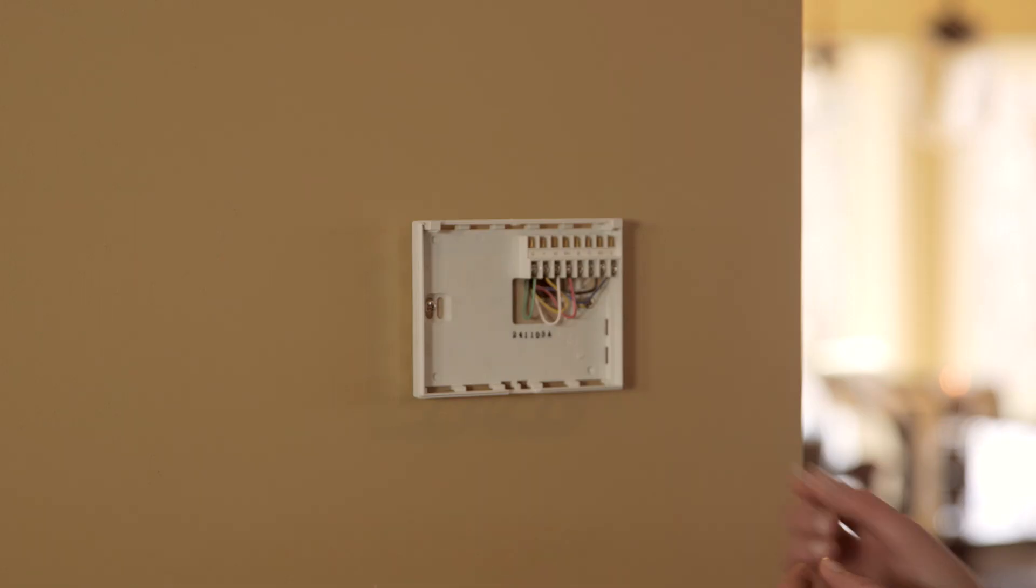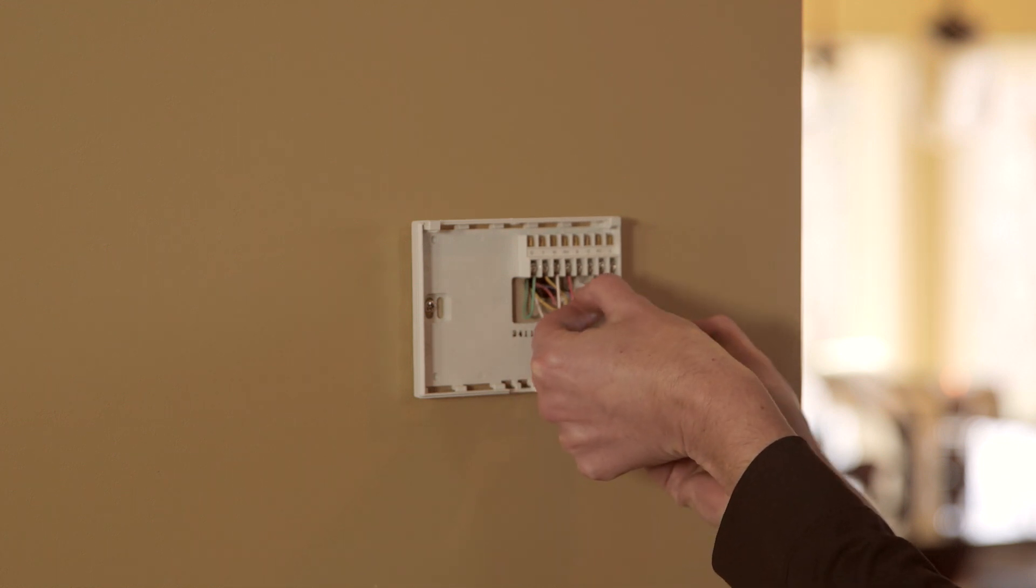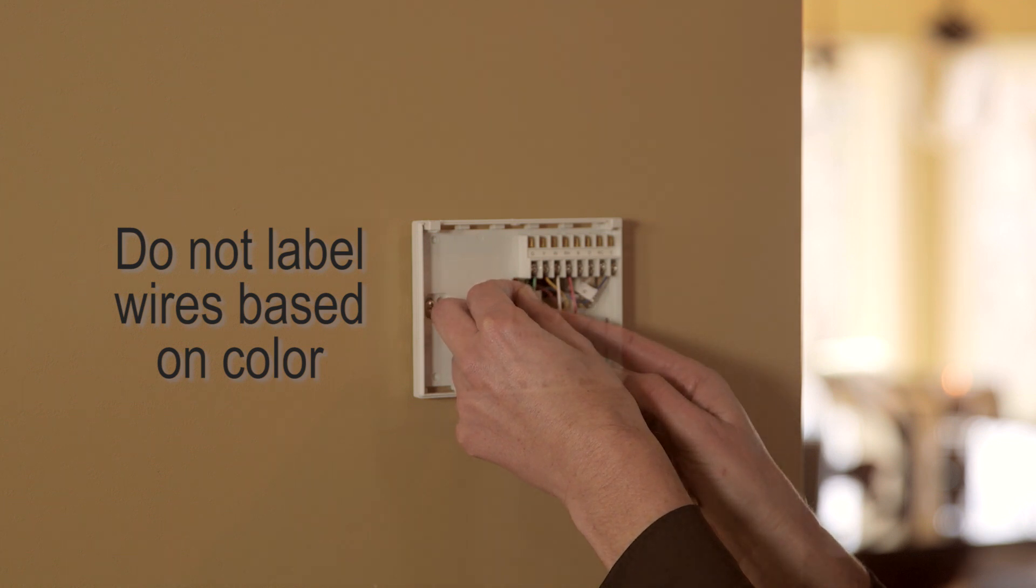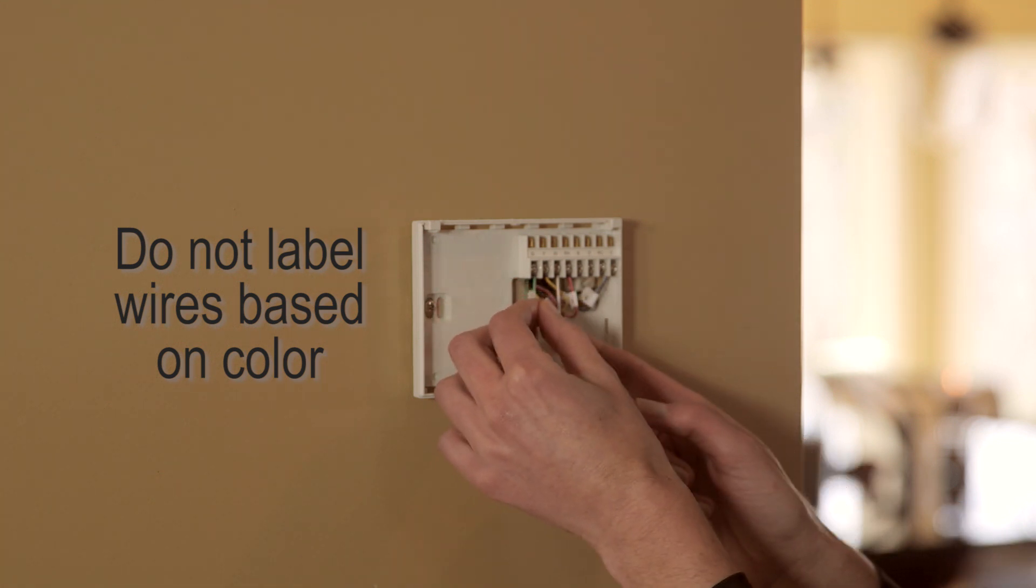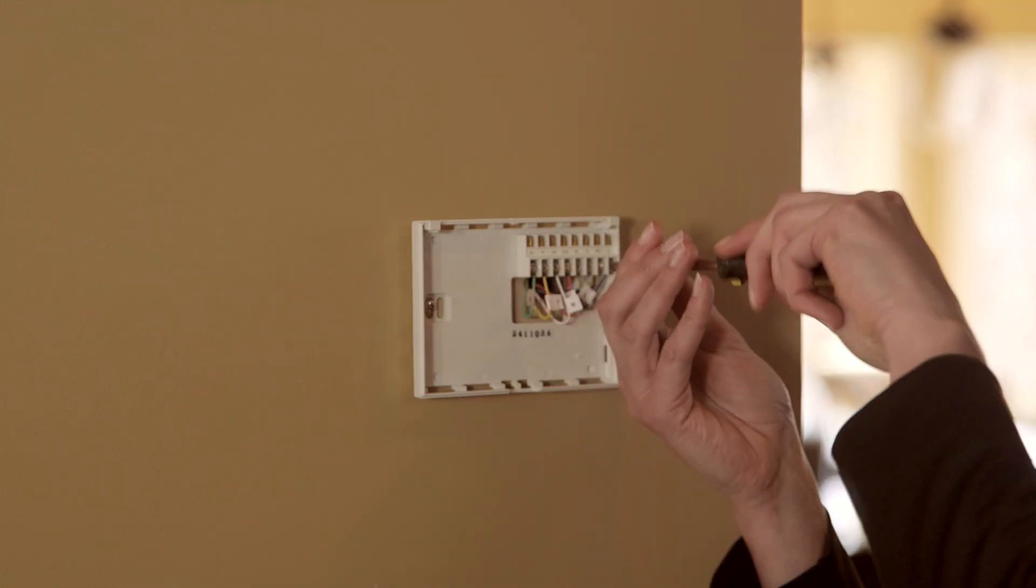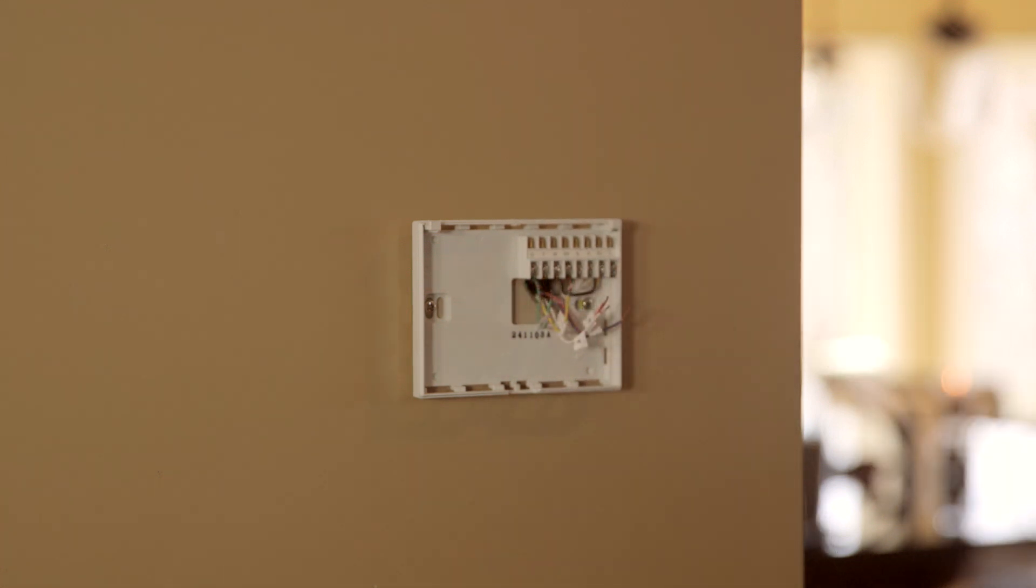Now you can use the supplied sticky tags to label each wire according to the letter on the terminal in which it was inserted. Do not label the wires based on their color, because wire color does not necessarily indicate the wire's function. After labeling your wires, use a screwdriver to loosen the terminals and pull the wires out.